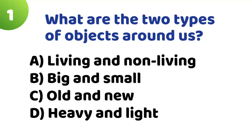Question 1: What are the two types of objects around us? Option A: Living and non-living. Option B: Big and small. Option C: Old and new. Option D: Heavy and light. The correct answer is Option A — Living and non-living.